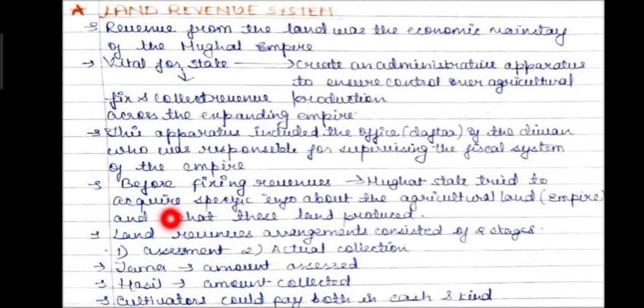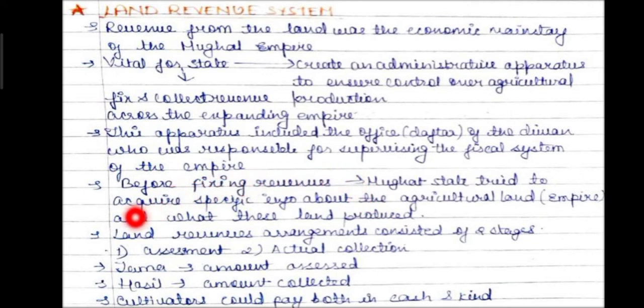Land revenue arrangements consisted of two stages. First, the assessment of the land. Second, the actual collection — what must be collected from that particular land. Jama was the amount assessed, and Hasil was the amount actually collected. Cultivators could pay both in cash and in kind.